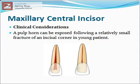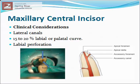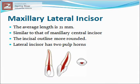Clinical consideration: the pulp can be exposed following a relatively small fracture of an incisor corner in young patients. As shown in the picture, the size of the pulp is much bigger in young persons compared to old persons. Lateral and accessory canals are usually found in the apical third. Most canals are straight; however, 15 to 20 percent of roots show labial or palatal curvature. Labial perforation is most commonly seen during excess cavity preparation.